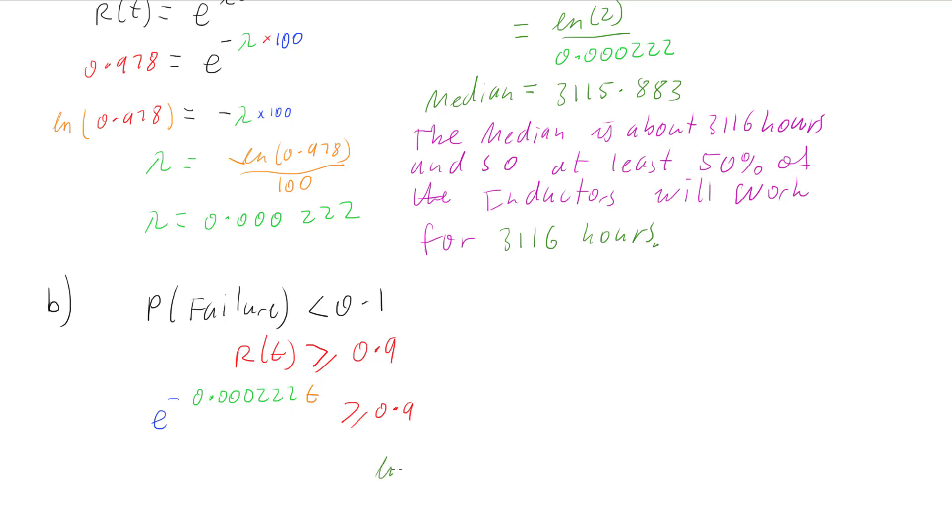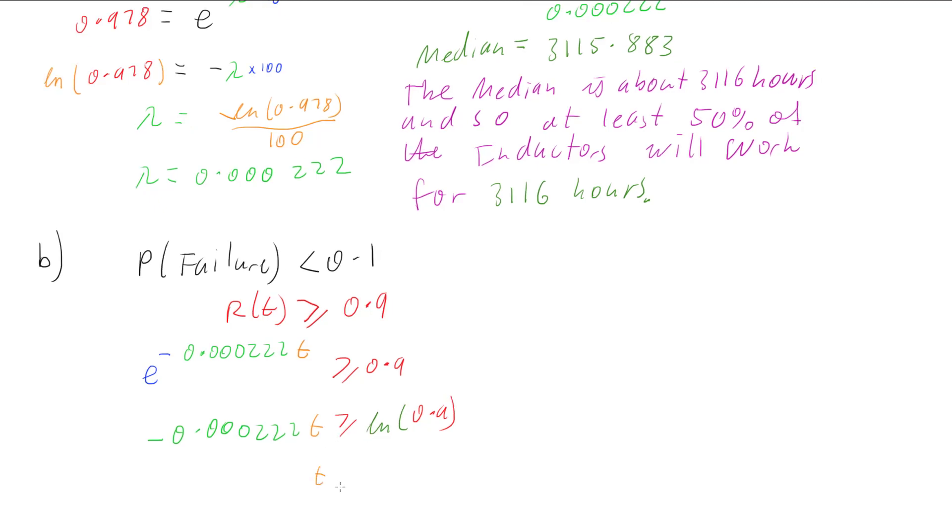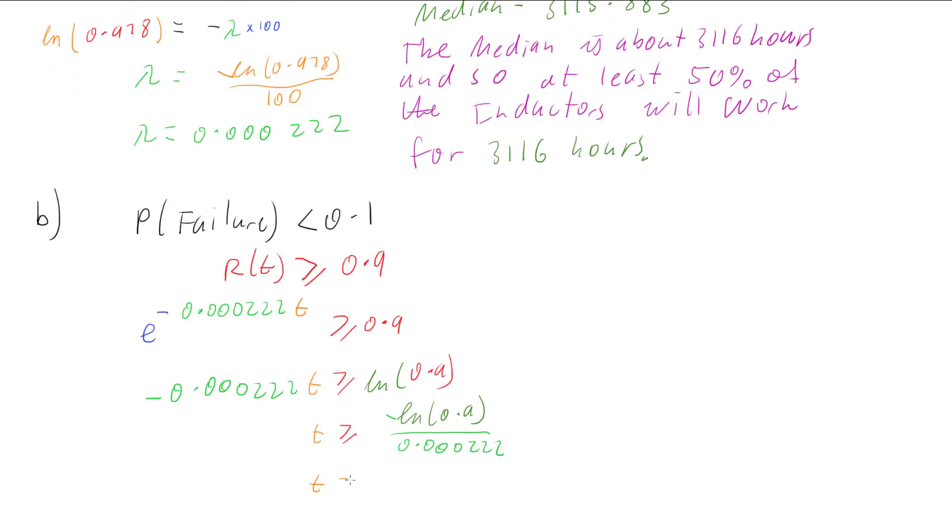So I'm going to take the natural log of both sides. So the natural log of 0.9 is going to be greater than or equal to negative 0.000222 multiplied by time. And so I can get time by dividing off, so time is going to be greater than or equal to the natural log of 0.9 divided by negative 0.000222. And so if we work that out, our time is greater than or equal to 473.62 hours.